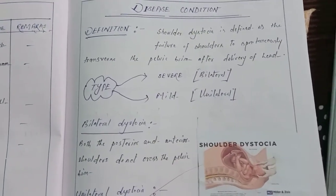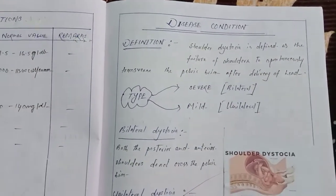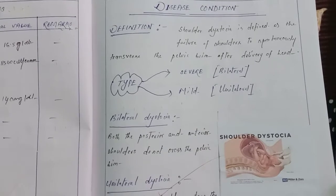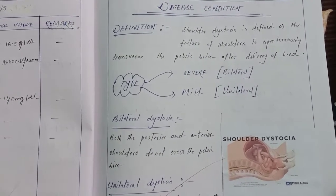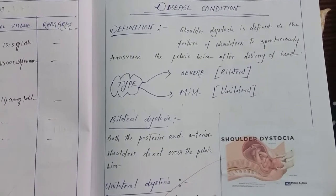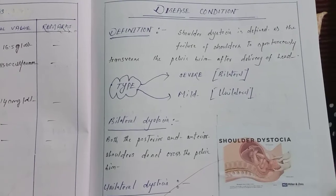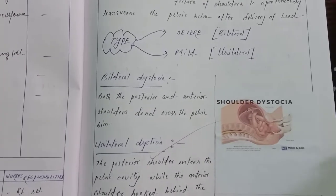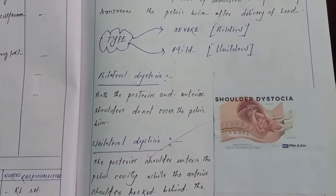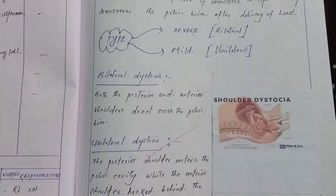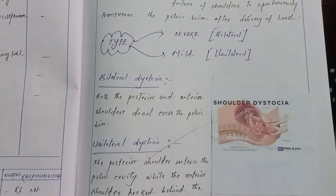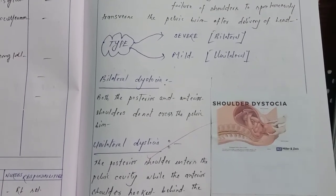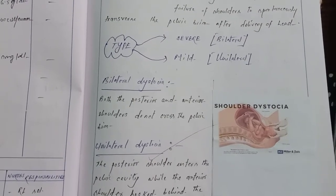Disease condition: shoulder dystocia is defined as the failure of the shoulder to spontaneously traverse the pelvic brim after delivery of the head. It is of two types — severe (bilateral) where both shoulders get stuck in the pelvic brim, and mild (unilateral) where one shoulder is delivered and the other gets stuck.